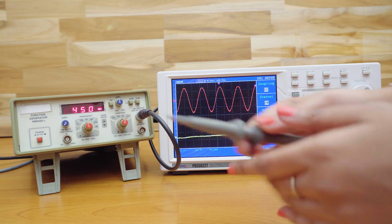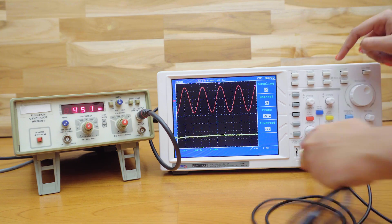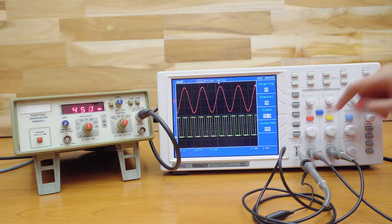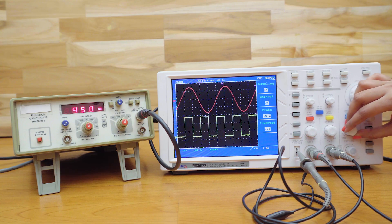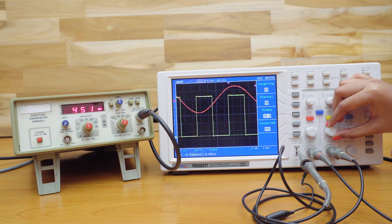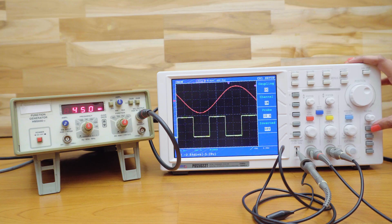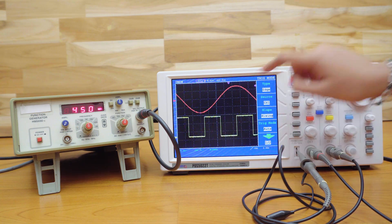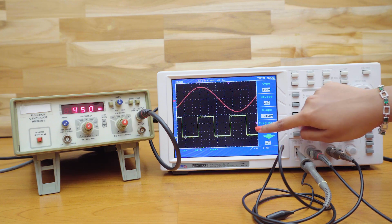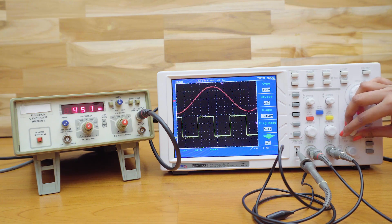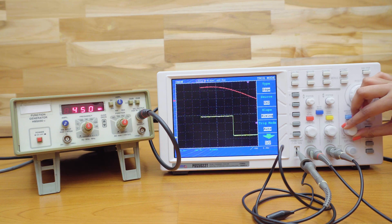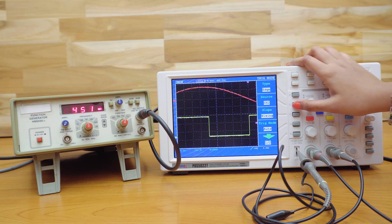Now, I'm connecting the second channel probe to the DSO's internal oscillator, which is a square wave of 5V and 1kHz frequency and is used as a reference signal. As the source in trigger menu is set to channel 1, let me first change it to channel 2 to make the second signal stable.